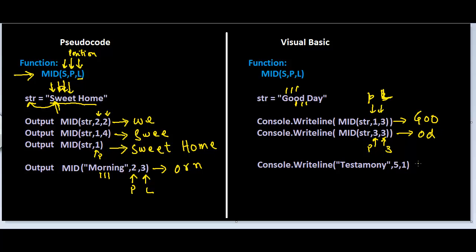In this example we want to start from position five and extract just one character because the length is 1. Counting one, two, three, four, five — this is the only character that is going to be output. The MID function works by specifying the position and then the length of the string to extract from that position onwards.